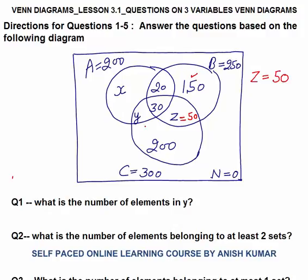Now this complete C circle, or C set, must equal 300. If we compute 200 plus 50 plus 30, this becomes 280. So y should equal 20. We got the value of y as 20.